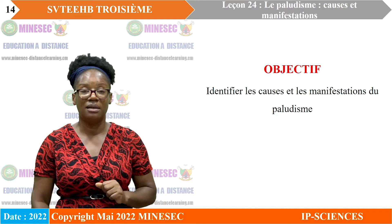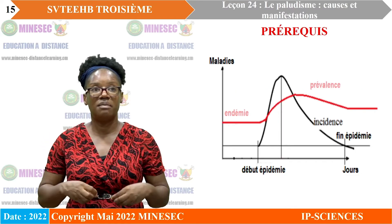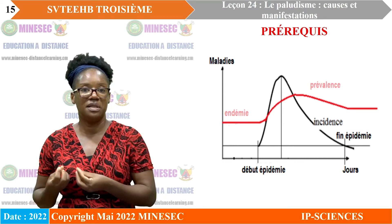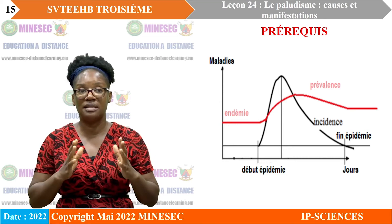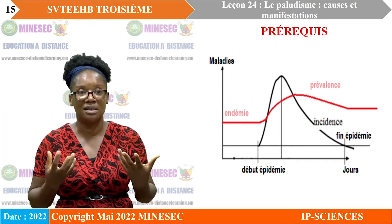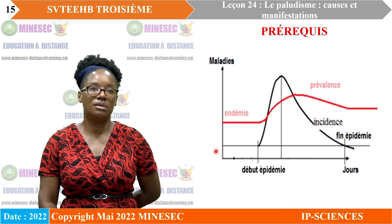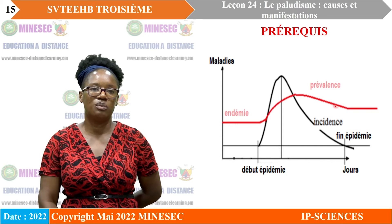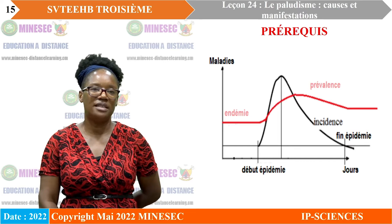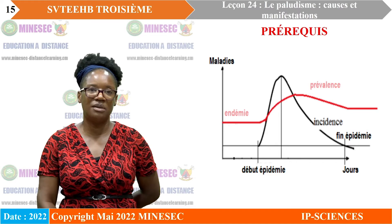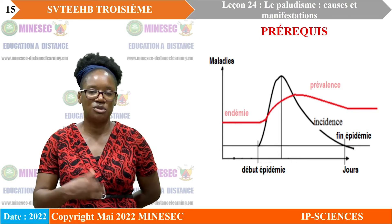Avant cela, il est important de rappeler ce qu'on appelle maladie endémique et maladie épidémique. Lorsque nous regardons le graphique en visuel, nous voyons que dans le cas d'une endémie, représentée en rouge, la prévalence de la maladie est pratiquement stable dans la population, quelle que soit la période. C'est une maladie présente de manière permanente dans une population.